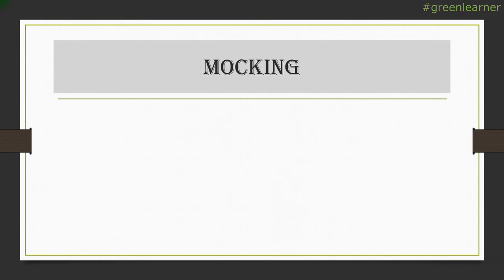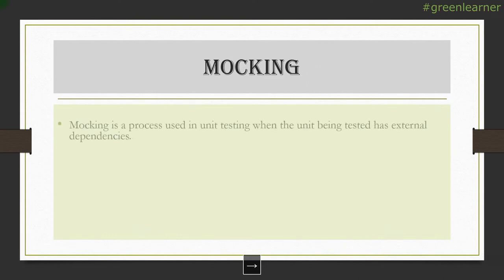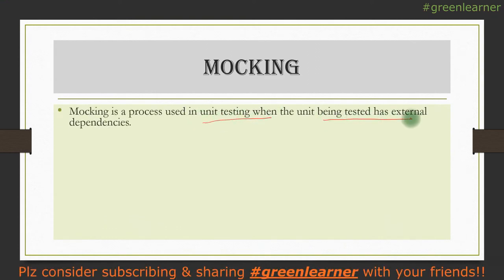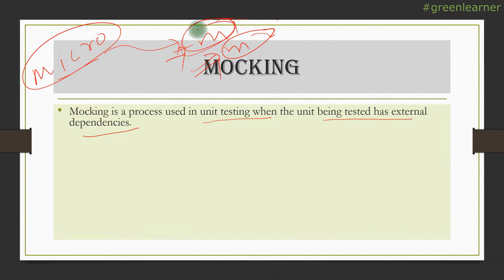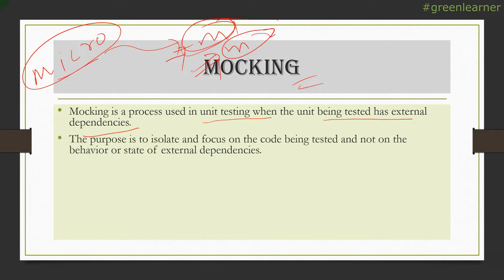Mocking is a different library used alongside JUnit for unit testing. Mocking is a process used in unit testing when the unit being tested has external dependencies. When you have a microservice calling other services, those are external dependencies. When doing unit testing, you do not test those external dependencies — instead, you mock their behavior, controlling what they return. The purpose of mocking is to isolate and focus on the code being tested, not on the behavior or state of external dependencies.